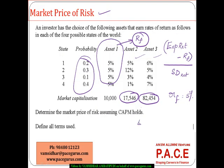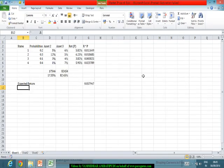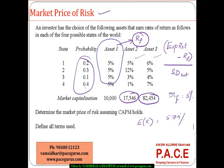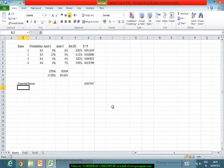The expected return of the portfolio is 5.79%. Now, to find the variance of this portfolio, recall the variance formula: for weights W1 in asset A and W2 in asset B, the portfolio variance is W1 squared times variance of A, plus W2 squared times variance of B, plus 2 times W1 times W2 times the covariance between A and B.